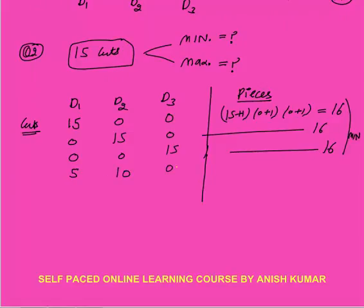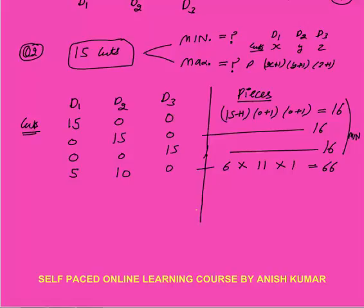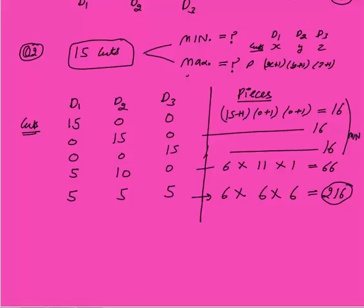For example, if you make 5, 10, and 0 cuts: pieces = 6 × 11 × 1 = 66. For maximum pieces, make equal cuts in all directions. With 15 cuts: 5 cuts in D1, 5 in D2, and 5 in D3. Pieces = (5+1)(5+1)(5+1) = 6 × 6 × 6 = 216 pieces. So minimum is 16 and maximum is 216.